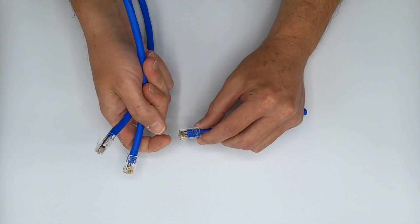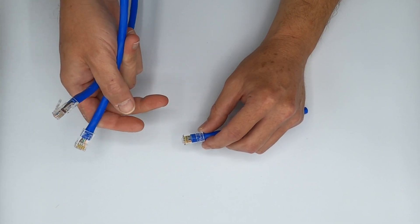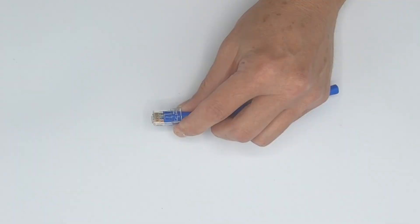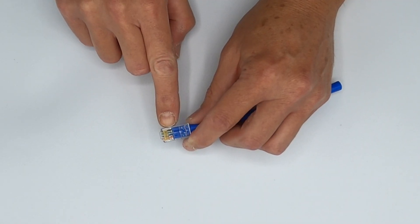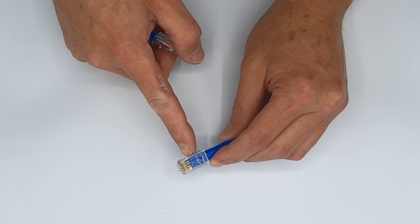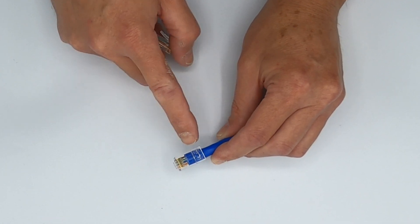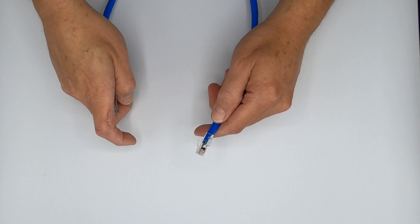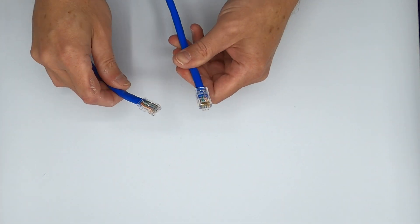It is going in as far as it will go. In other words, I untwisted the conductors, flush cut, pushed in the cable jacket, and I got that cable jacket as far up into the plug as I could take it. The idea here was to minimize the amount of untwisted pair from this point to this point. So this cable is going to give you the most headroom.